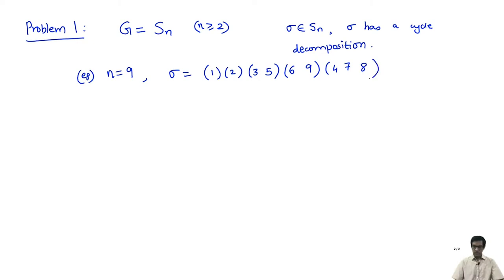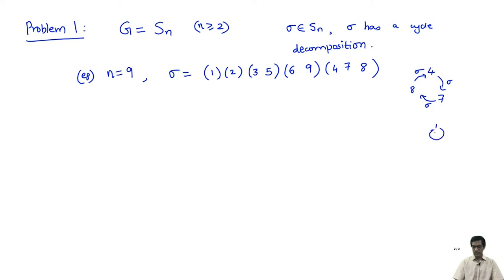This is a permutation of the numbers 1 through 9. This cycle decomposition says, for example, that 4, 7, and 8 form a 3-cycle. Sigma maps 4 to 7, 7 to 8, and 8 back to 4. The element 1 is mapped back to itself. There are also 2-cycles: 3 goes to 5 and 5 goes to 3.